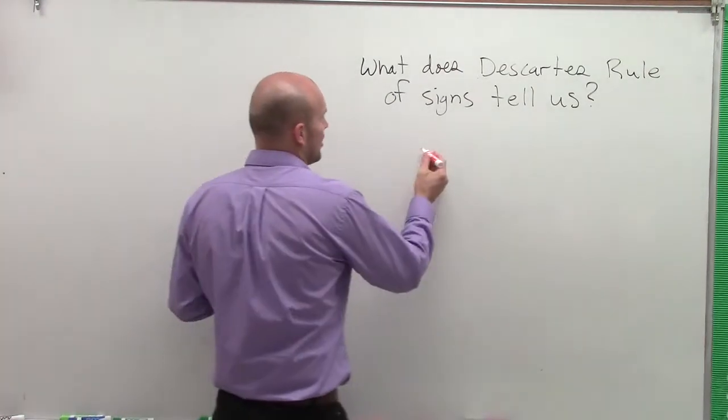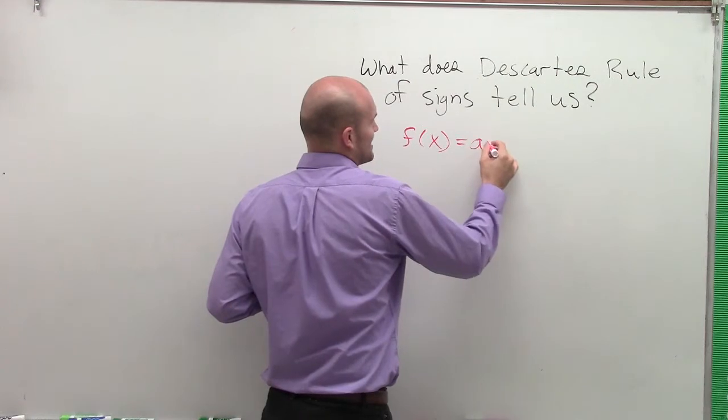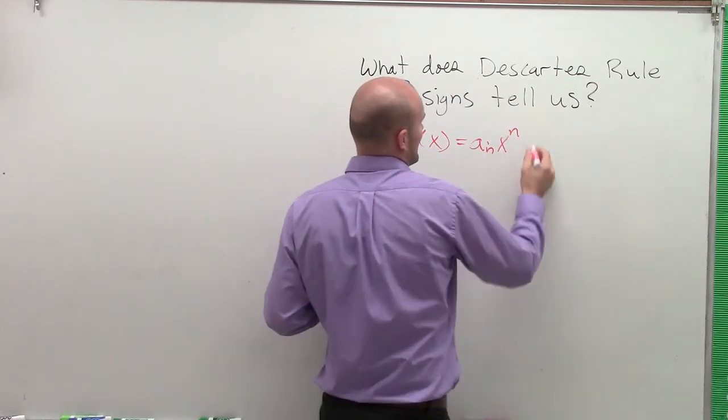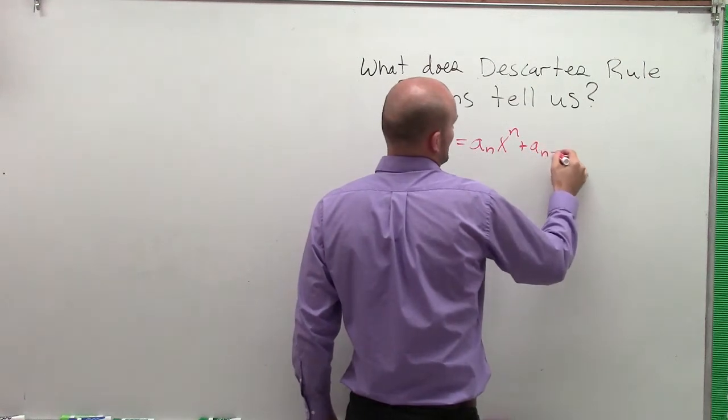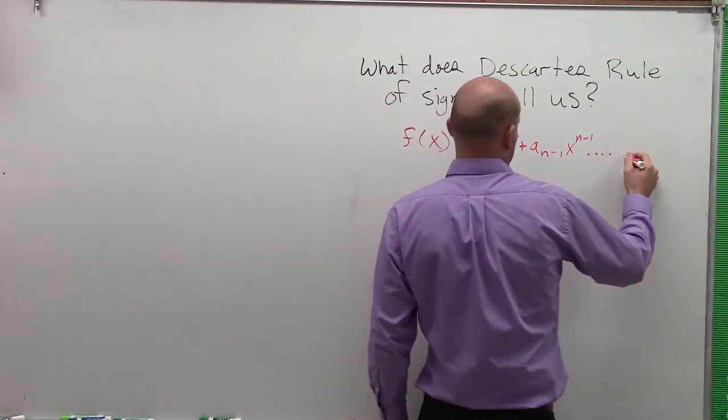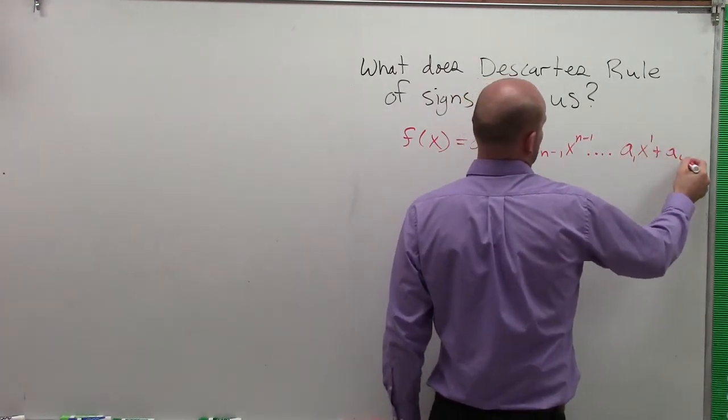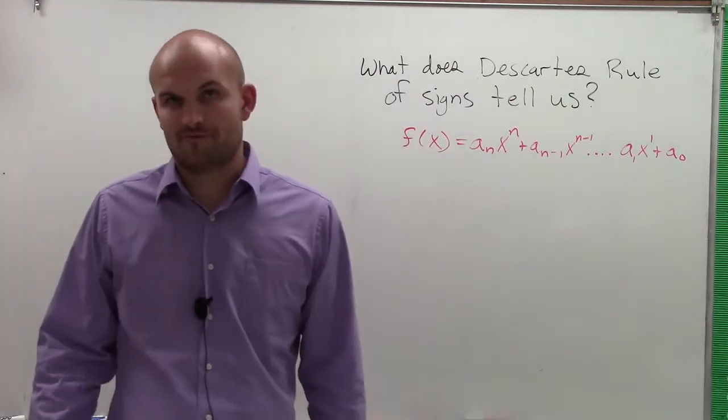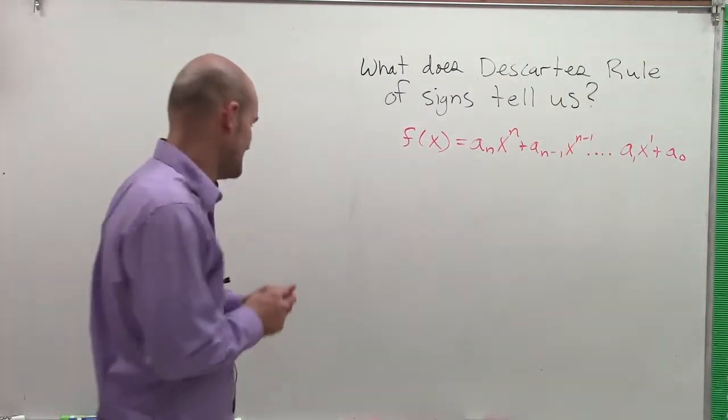Let's go and get to the problem. So all the Descartes' Rule of Signs tells us, if we have a polynomial f of x equals a_n times x to the n plus a_{n-1} times x to the n-1, dot dot dot, a_1 x to the 1 plus a_0. If we have a polynomial in that form, which is our form for a polynomial, right, that's how we wrote it in the beginning of the year.